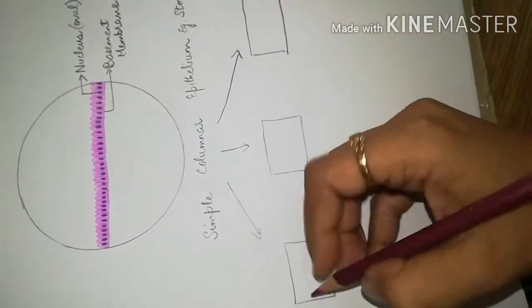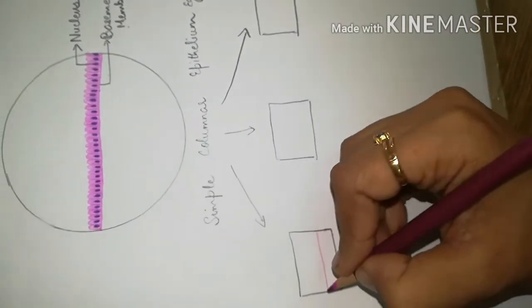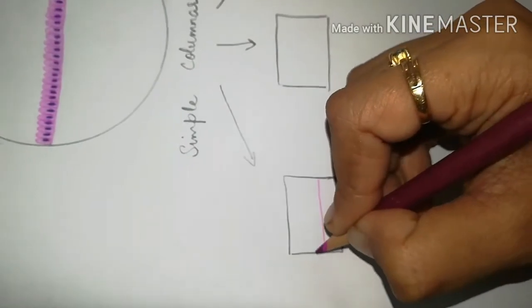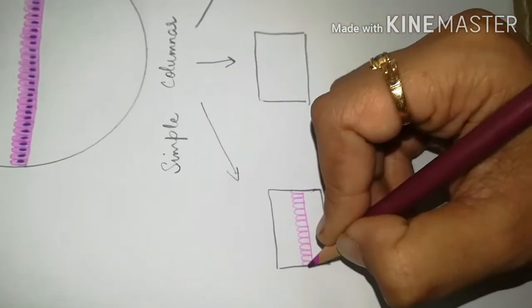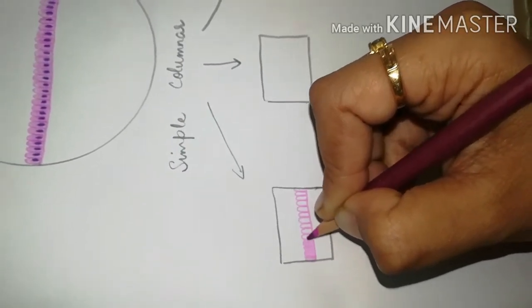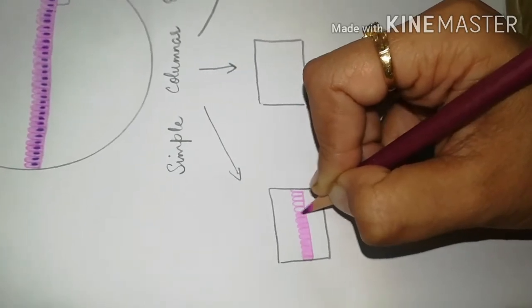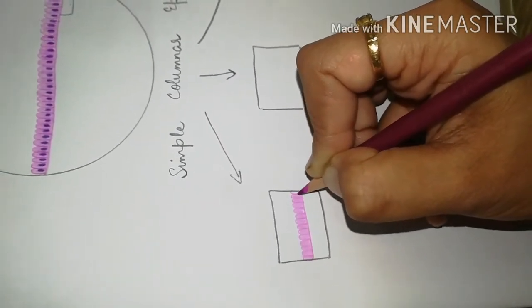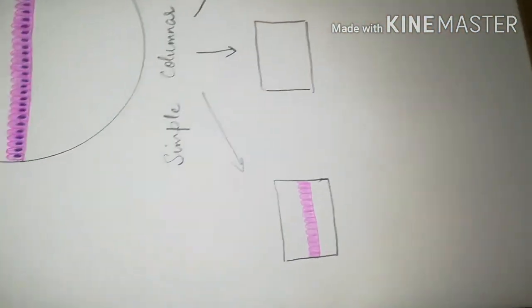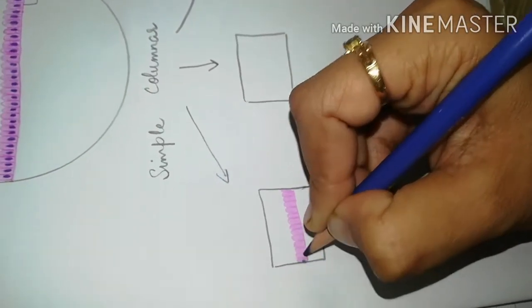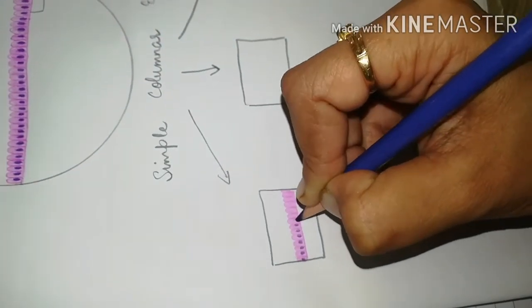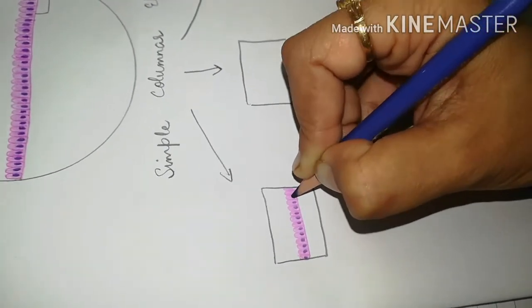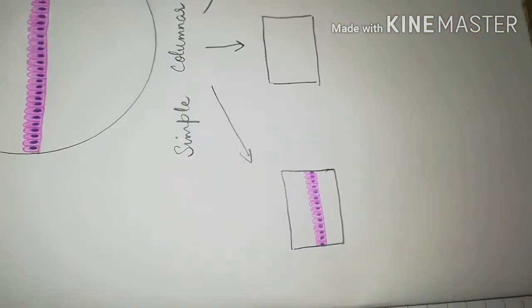In three instances we will draw simple columnar epithelium along with goblet cells, along with cilia, and along with microvilli. First of all, here we are drawing simple columnar epithelium with cilia. We will again draw the simple columnar shaped cells, fill the cytoplasm of each and every cell, and then draw the nucleus again in the lower half in oval shape, not touching the basement membrane. Then we will draw the cilia like this.